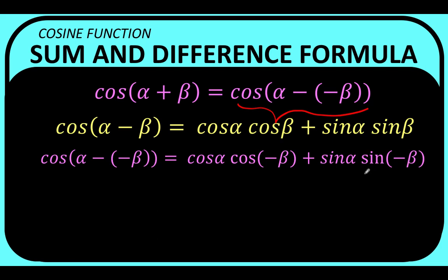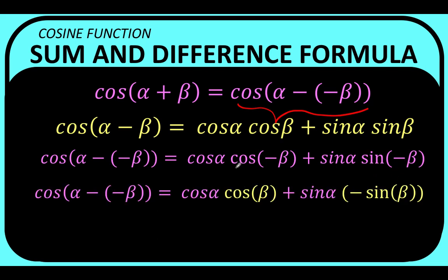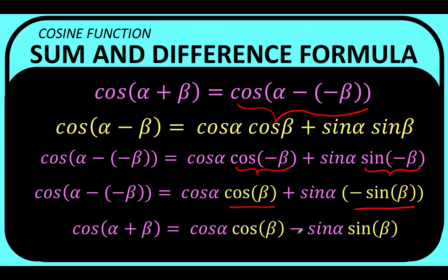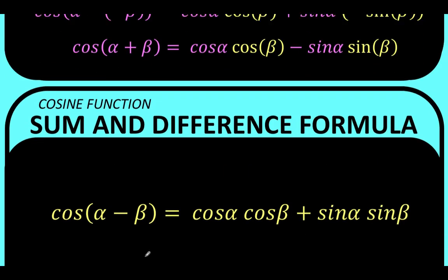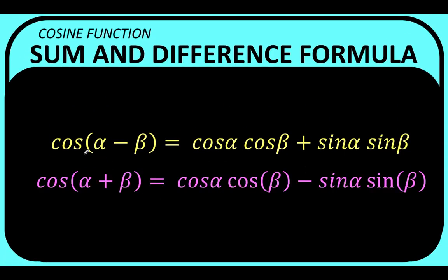Substituting negative beta into the difference identity gives cosine alpha cosine(negative beta) plus sine alpha sine(negative beta). Since cosine is an even function, cosine(negative beta) equals cosine beta. Since sine is an odd function, sine(negative beta) equals negative sine beta. Therefore sine alpha times negative sine beta gives negative sine alpha sine beta, and the sum identity becomes: cosine(alpha plus beta) equals cosine alpha cosine beta minus sine alpha sine beta.